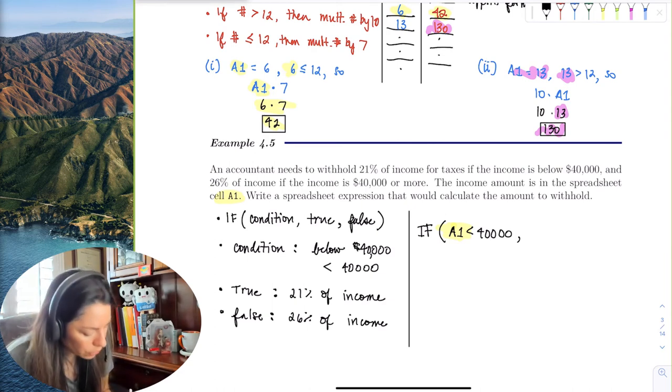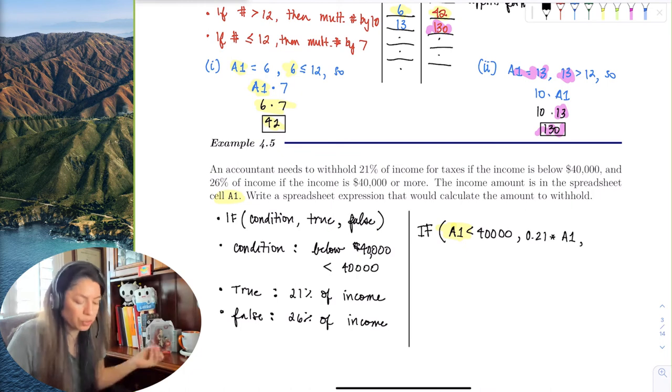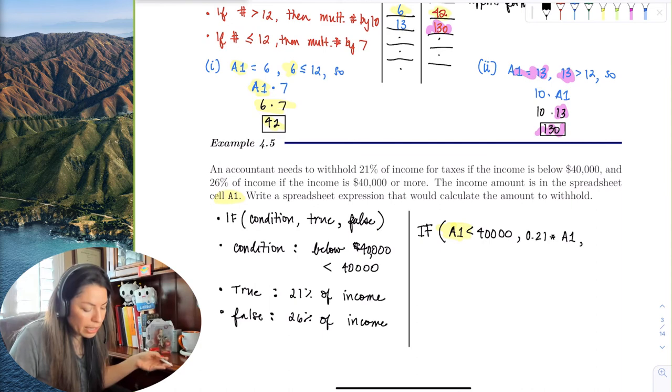So the condition where it's true is 21% of the income. So that would be 0.21 times whatever A1 is, because that would be true. If the income is less than, then we multiply by 21%.